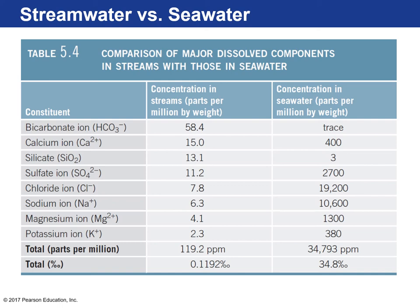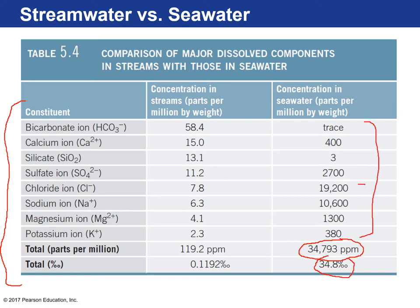Comparing river water to seawater: pure water has very few dissolved solids. Seawater has about 34,000 parts per million — around 34 parts per thousand — of dissolved solids, mostly chloride and sodium, which is why it tastes unpleasant. River water has much fewer dissolved solids — only about 0.1 parts per thousand.